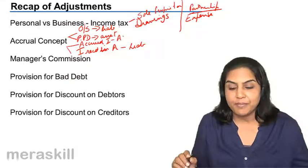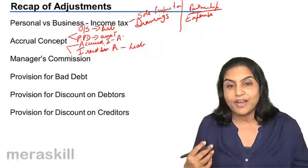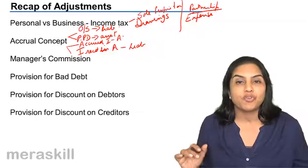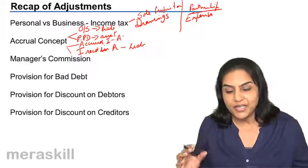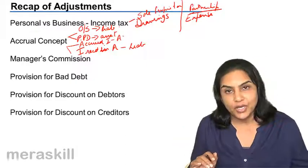Why is it an asset? Because it is a receivable. We have earned the income but we have not yet received it. So all incomes for the current year need to be brought into the books.